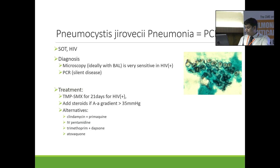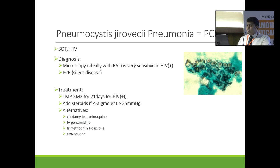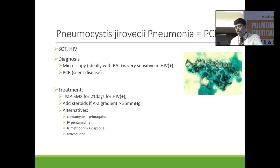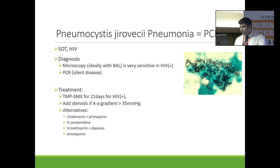PCP is commonly seen and often diagnosed based on clinical, radiological, and background history rather than positive tests. It is more common in solid organ transplant recipients and HIV patients. Microscopy, ideally with BAL, is very sensitive, and PCR is also available. Treatment is Trimethoprim-Sulfamethoxazole for 21 days. If the A-a gradient is more than 35 mmHg, add steroids. Alternatives include Clindamycin plus Primaquine, IV Pentamidine, Trimethoprim plus Dapsone, or Atovaquone, depending on severity.